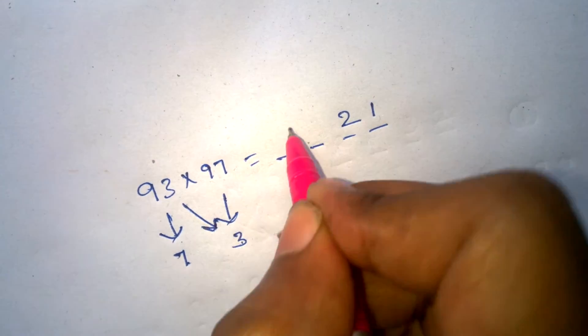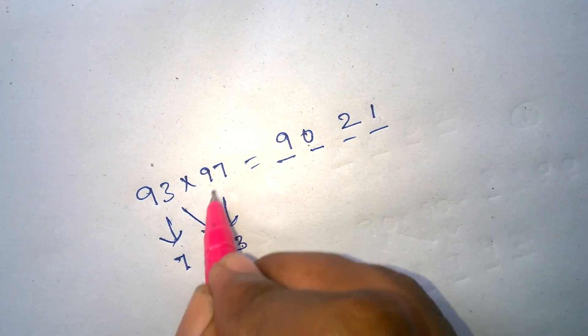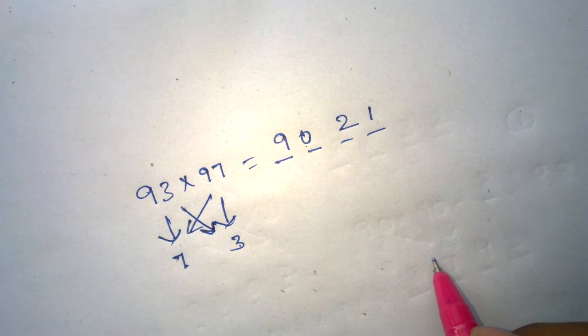93 minus 3 is 90, or 97 minus 7 is the same.